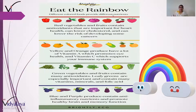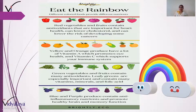Eat the rainbow! Rainbow toh koi nahi khata — Indradhanush isko toh koi nahi khata. Lekin different colored foods provide different nutrients. Alag-alag colored foods hote hain, unke alag-alag pohshak tatv hote hain. Jaise sabse pehle aata hai red color — red color vegetables and fruits contain antioxidants that are important for heart health, can lower cholesterol, and can lower the risk of developing some cancers.